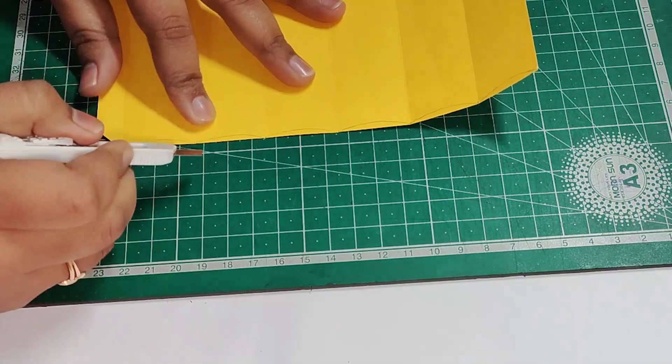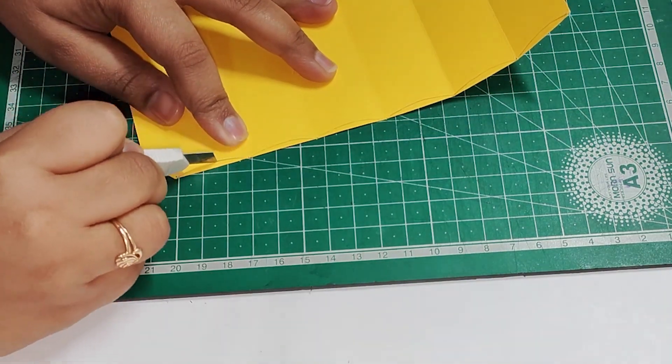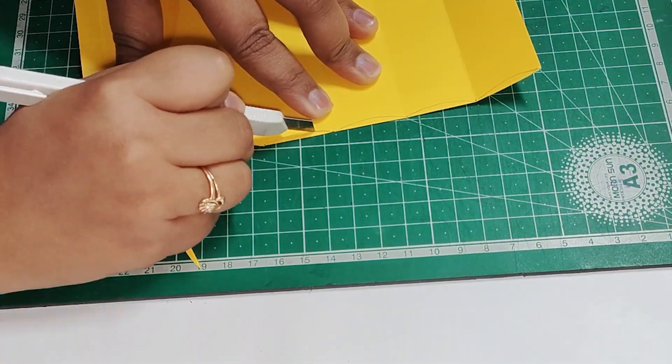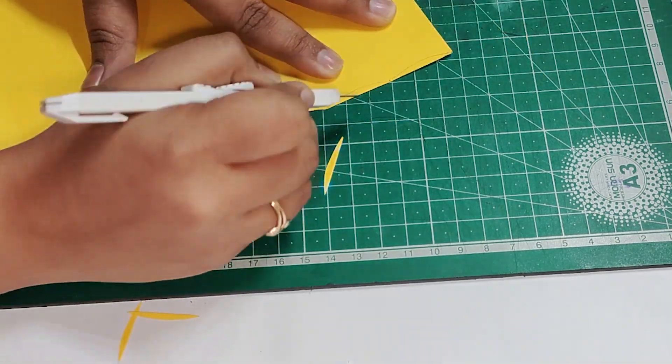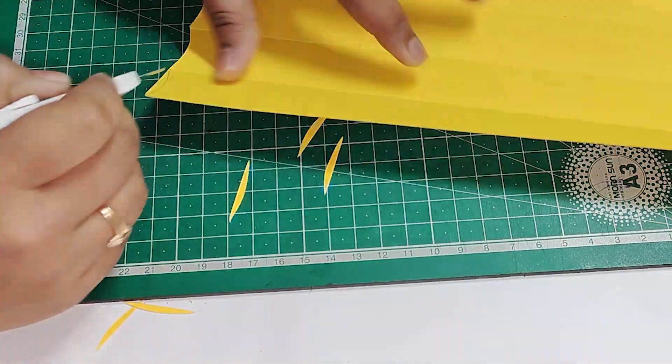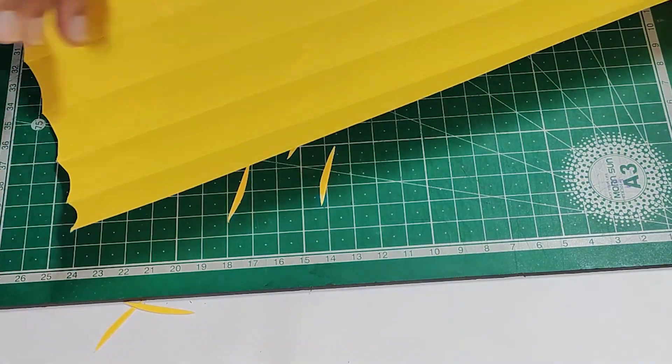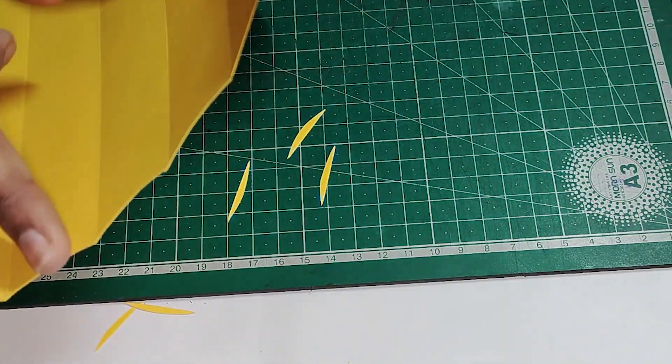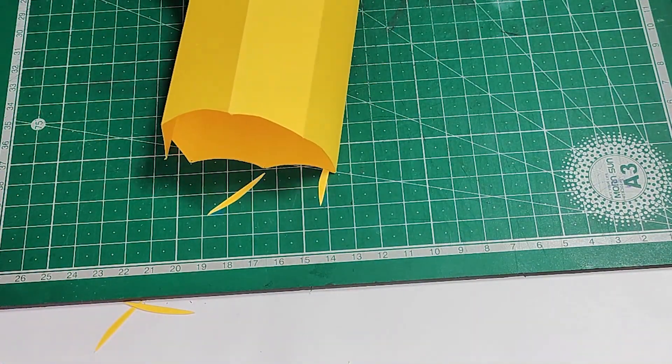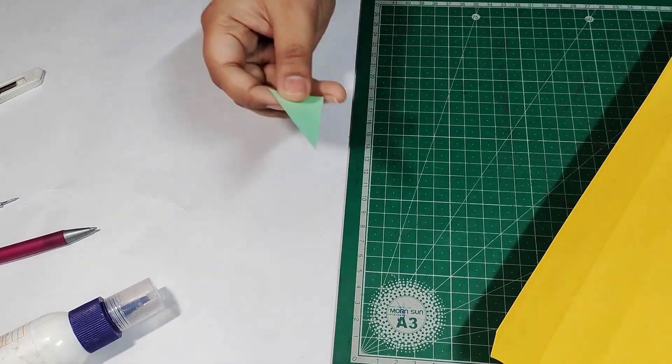After tracing from the stencil, we will cut all the edges. So here our pencil body is ready. Now we will make the front pointed portion of the pencil.